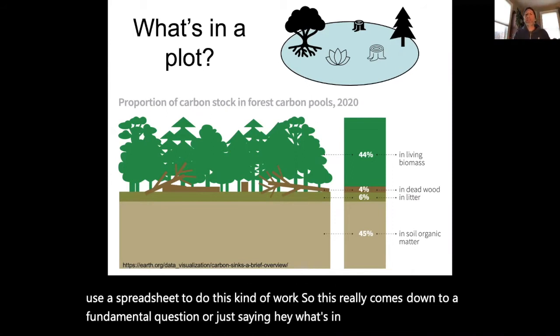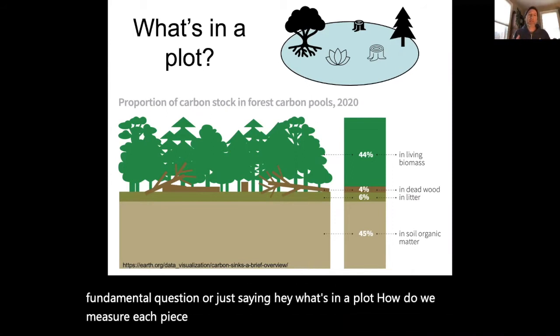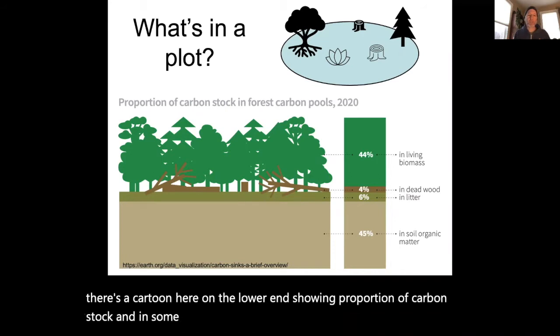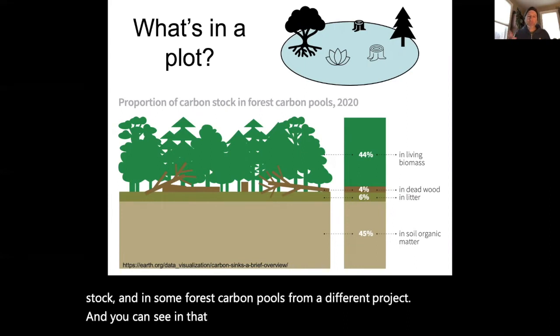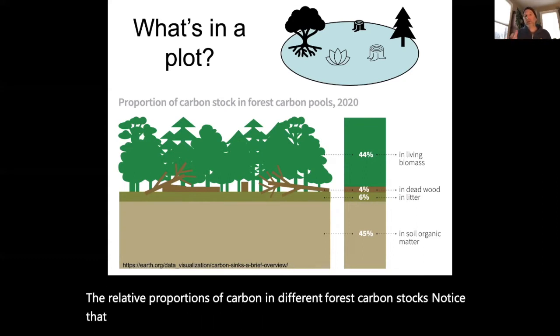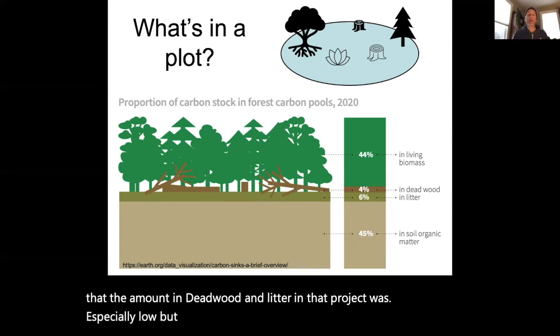How do we measure each piece of carbon that's in that plot and add it all together? There's a cartoon here showing proportion of carbon stock in some forest carbon pools from a different project. You can see the relative proportions of carbon in different forest carbon stocks. Notice that the amount in deadwood and litter in that project was especially low, but the large amounts of carbon are in living biomass and in soil organic matter.